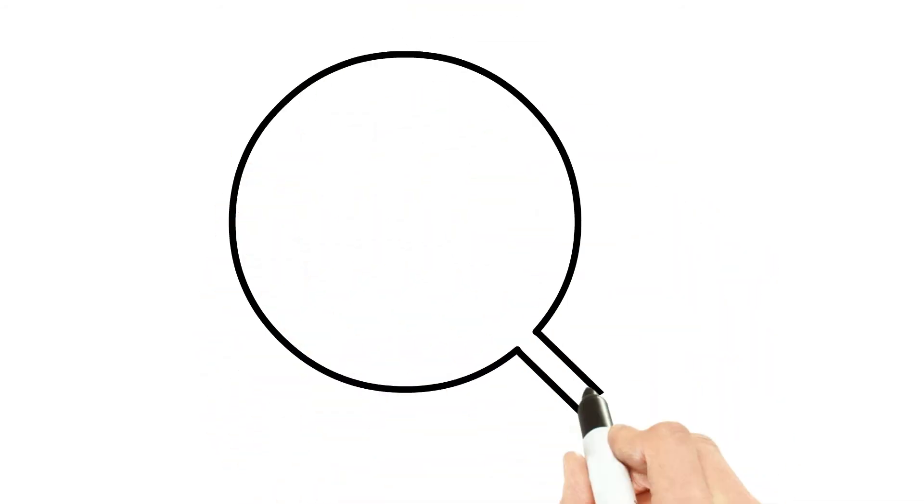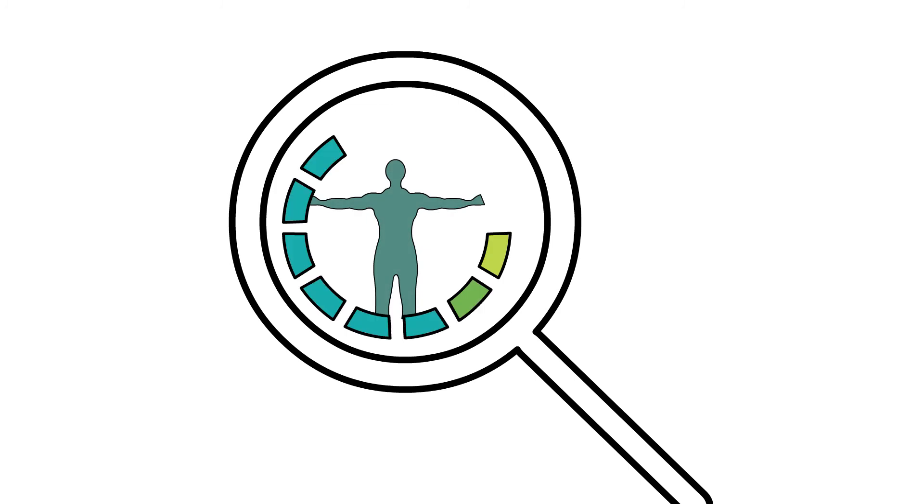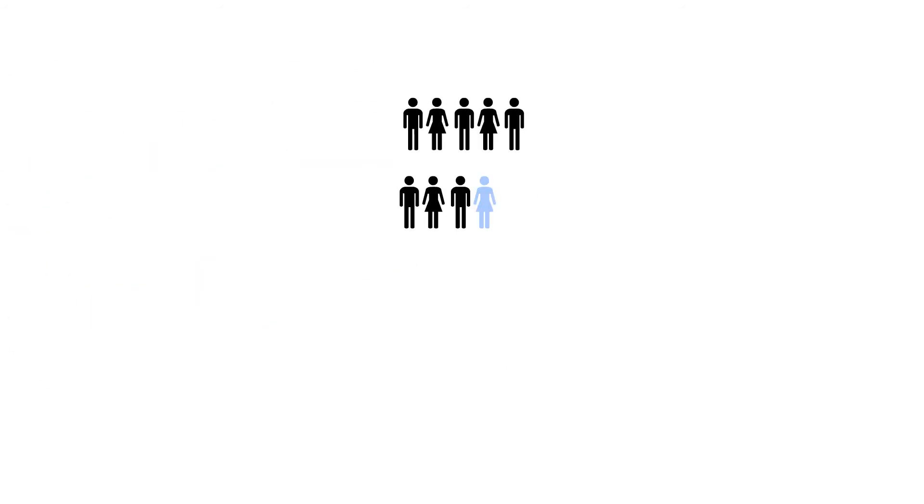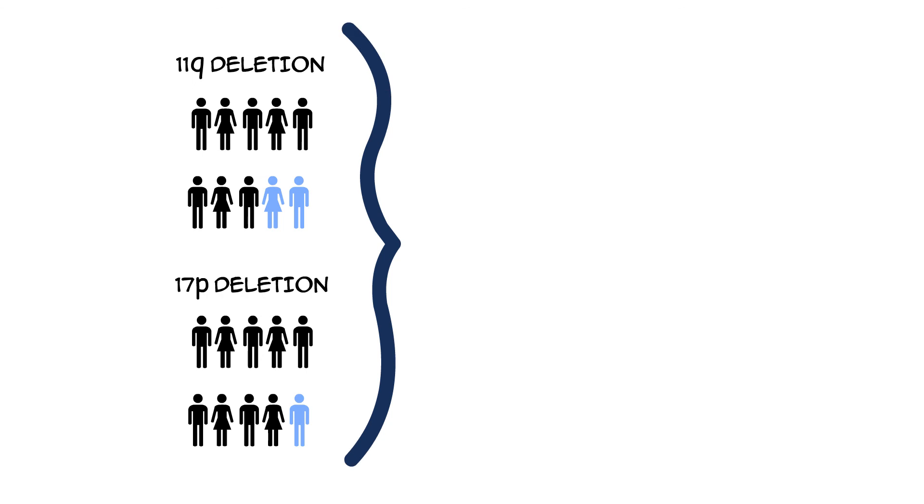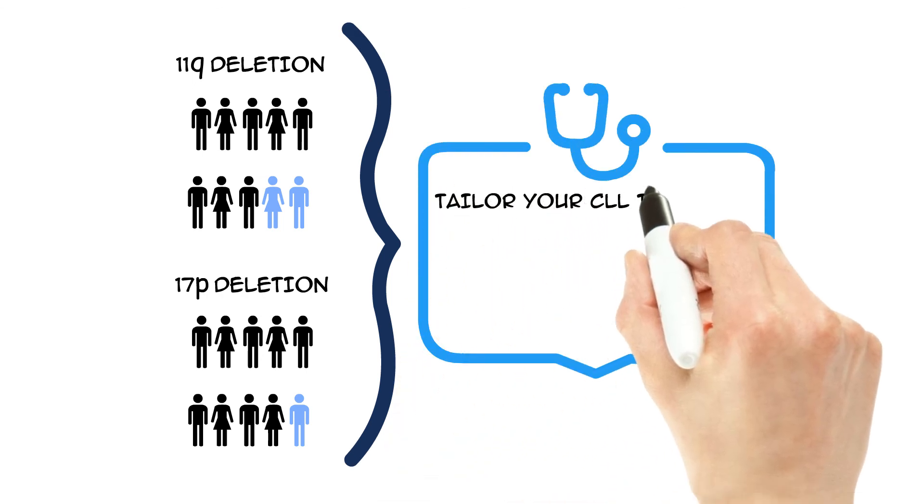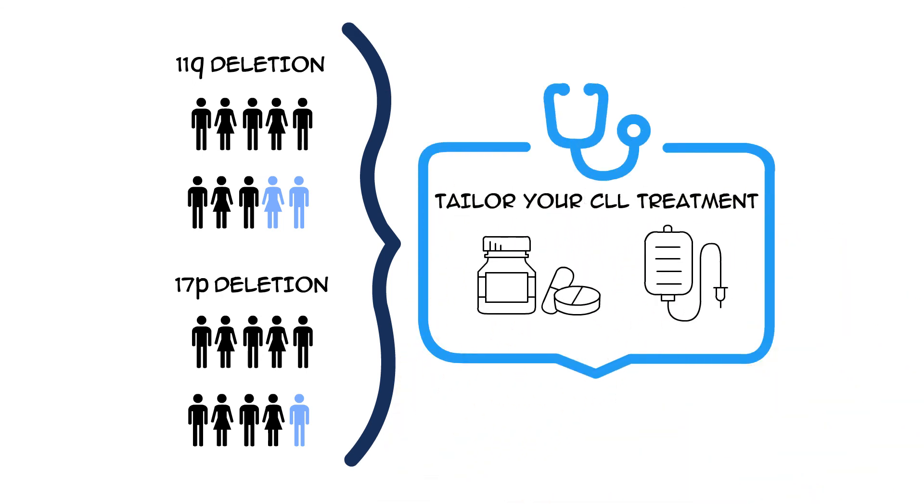Another exciting new discovery is that certain treatments may be more or less effective in people with different chromosomal changes. For example, if you have an 11q deletion or a 17p deletion, it might be possible to tailor your CLL treatment because it may respond better to certain treatments. So, your doctor may recommend different treatments for your CLL than for patients who don't have these changes.